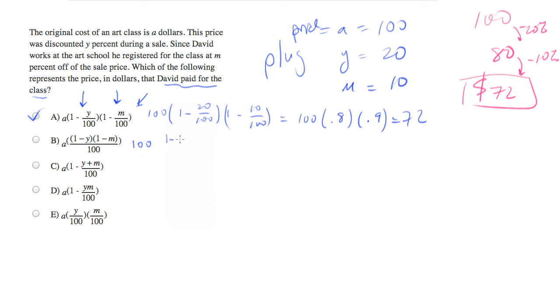Let's do (1 minus 20) times (1 minus 10) over 100. Well, these are negative numbers. We don't like that. That's not right.